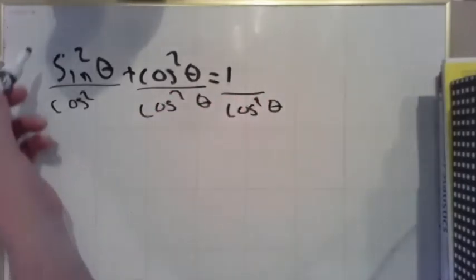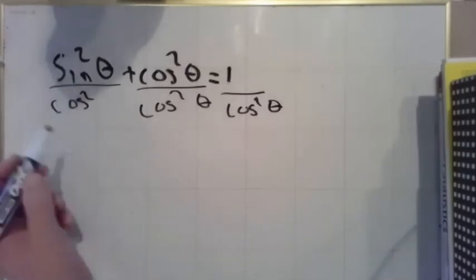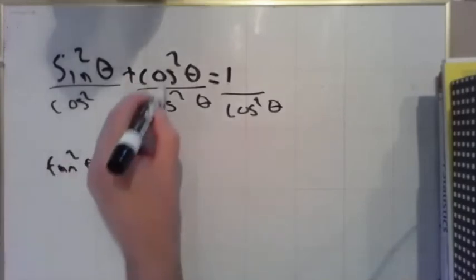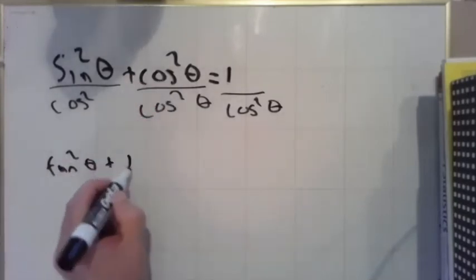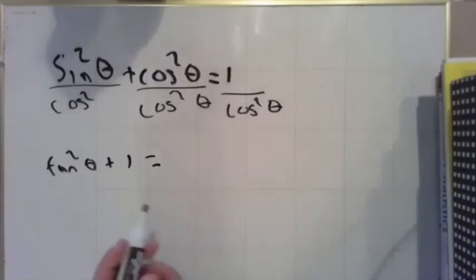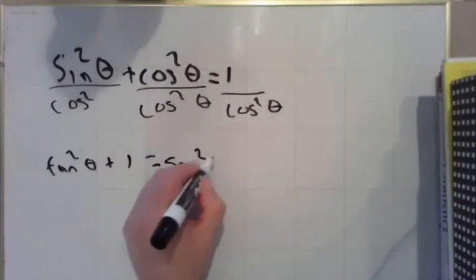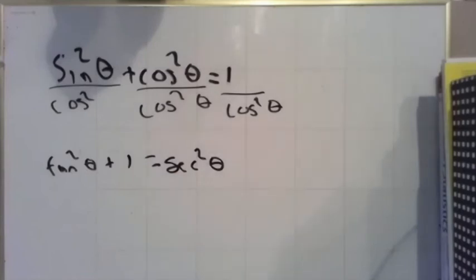Sine over cosine is tangent, so sine squared over cosine squared is tangent squared. Anything over itself is just one. And one over cosine is secant, so this guy over here is secant squared. So there's our second Pythagorean identity. That's equivalent to sine squared plus cosine squared equals one.